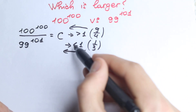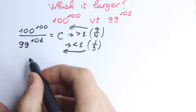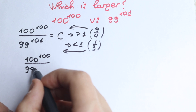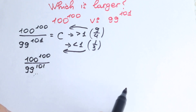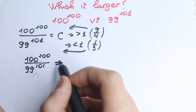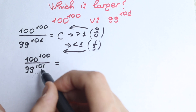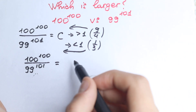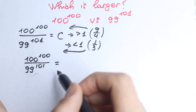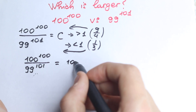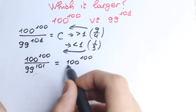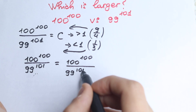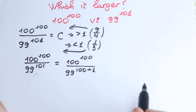So right now let's try to divide and see what the answer is. We have 100 to the power 100 over 99 to the power 101. We have power 100 in the numerator and 101 in the denominator, so we can work toward making the same power. First of all, let's write this 101 as 100 plus 1, so we have 100 to the power 100 over 99 to the power (100 plus 1). We just write it in another way, changing nothing.